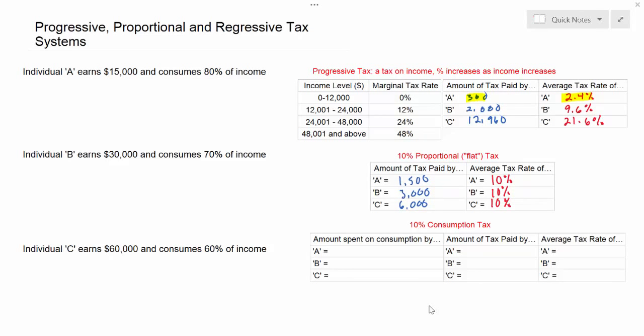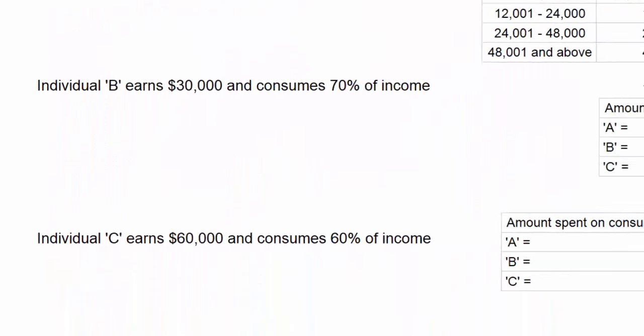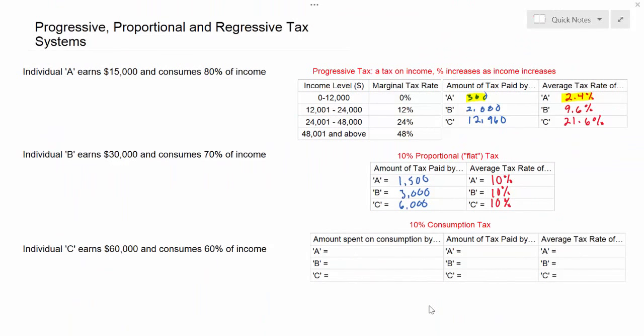In part one of this video, we talked about the impact of progressive marginal income taxes and proportional taxes on the amount of tax paid and the average tax rates of three hypothetical individuals. In part two of this video, we're going to go on to the third type of tax system that a country may use, which is a consumption tax, sometimes called a value added tax or a sales tax. Consumption taxes tend to be regressive rather than progressive or proportional, meaning that they place a larger burden on the people with the lower levels of income and a lower burden on people with higher levels of income.